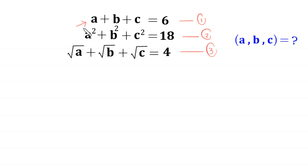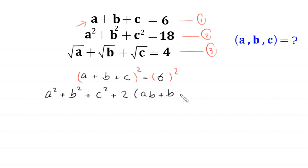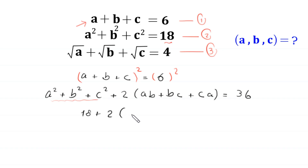First, we square both sides of equation 1. Equation 1 is a plus b plus c equals 6. By the algebraic identity, a plus b plus c whole squared equals a squared plus b squared plus c squared plus 2 times (ab plus bc plus ca), which equals 36. We replace a squared plus b squared plus c squared with 18, giving 18 plus 2(ab + bc + ca) = 36.